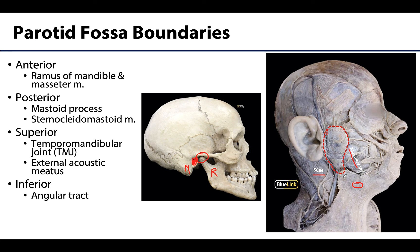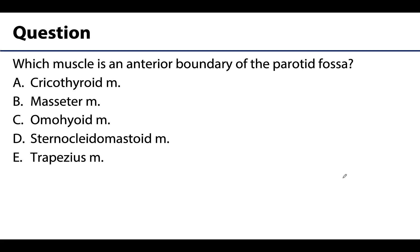So those are the boundaries of the parotid fossa. Let's do a quick review. Which muscle is an anterior boundary of the parotid fossa? Is it A) the cricothyroid, B) the masseter muscle, C) the omohyoid muscle, D) the sternocleidomastoid muscle, or E) the trapezius?